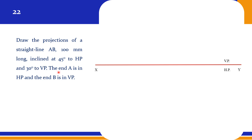The end A is in HP and the other end B is in VP — that is what makes it a typical problem. When end A is in HP, its front view will be on the XY reference line. So this will be your A dash; the front view point is A dash.